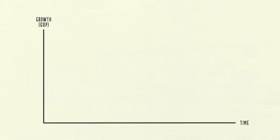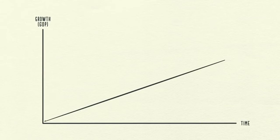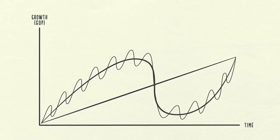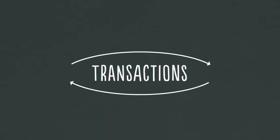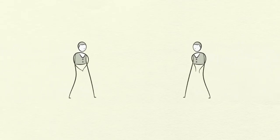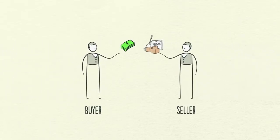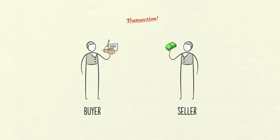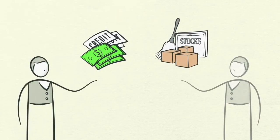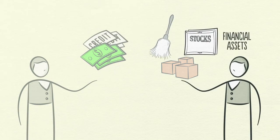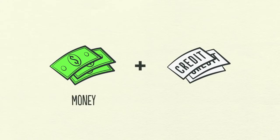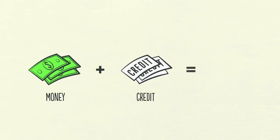We'll look at these three forces and how laying them on top of each other creates a good template for tracking economic movements and figuring out what's happening now. Let's start with the simplest part of the economy: transactions. An economy is simply the sum of the transactions that make it up, and a transaction is a very simple thing. Every time you buy something, you create a transaction. Each transaction consists of a buyer exchanging money or credit with a seller for goods, services, or financial assets.